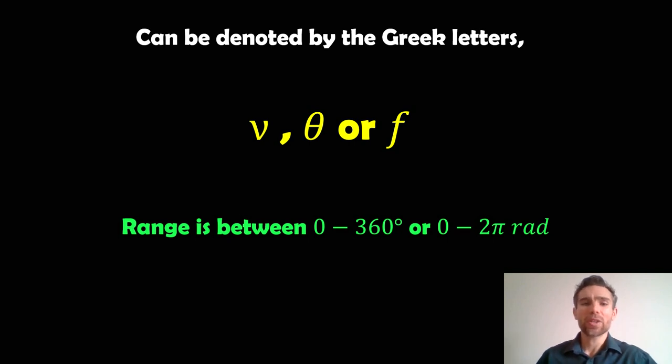So how is it normally given? Well, it's quite often given with either one of these Greek letters here, and the typical range is given between 0 and 360 degrees, or within radians, it'll be between 0 and 2π rad.